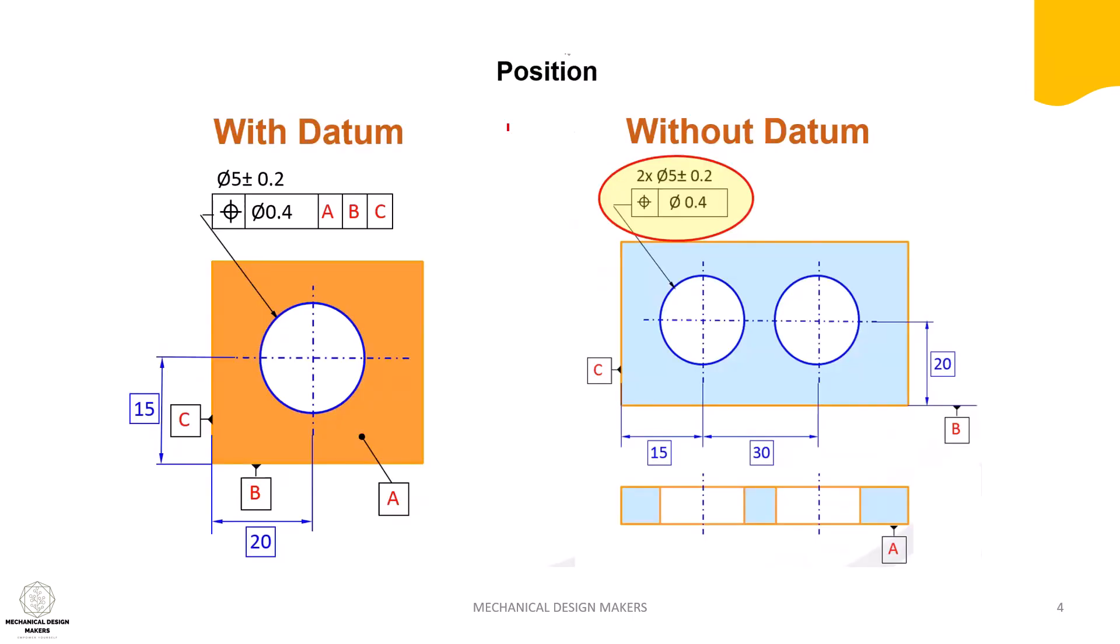Position tolerance - it is the major geometrical tolerance used in the industry. Position tolerance can be used with datum and also used without datum for some coaxial features.